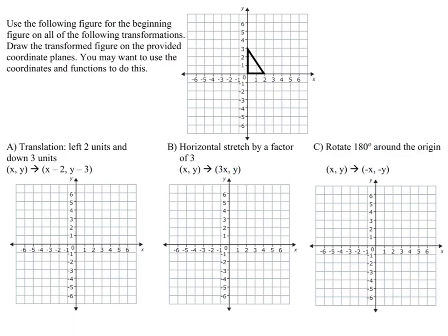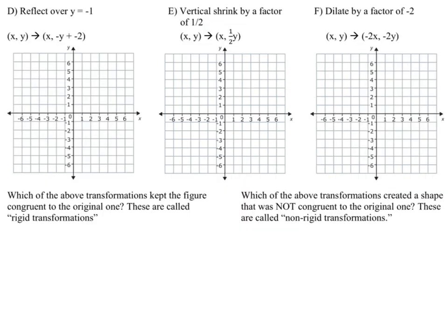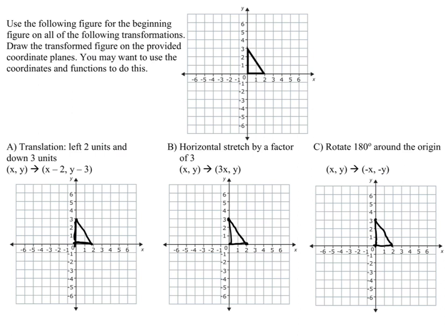Go to the next page. You're given a starting shape on all of these — you may want to draw it in. Then perform the transformation listed. For example, on A, move everything left two and down three, so the shape just shifts. Do this for all six, A through F, then come back.